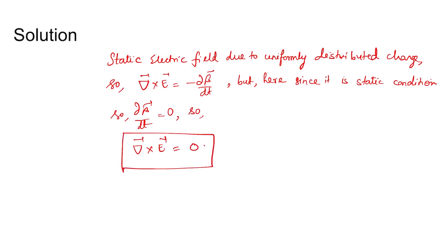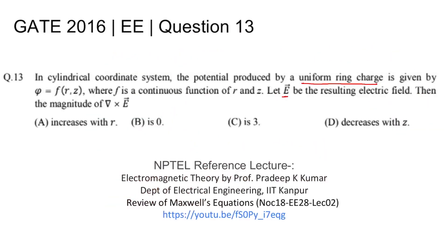Hence, there will be no curl due to a static electric field since there is no time-changing component due to magnetic field. So the answer is zero, option B. The magnitude of curl of E will be zero. Thank you.